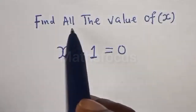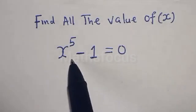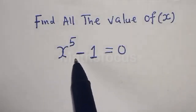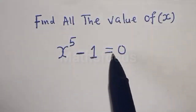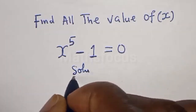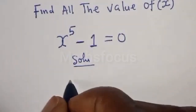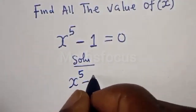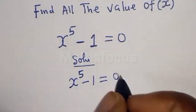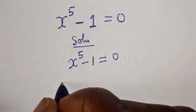Hello class, we want to find all the values of x from this given equation: x raised to the power 5 minus 1 is equal to 0. We have the given equation x to the power of 5 minus 1 is equal to 0.